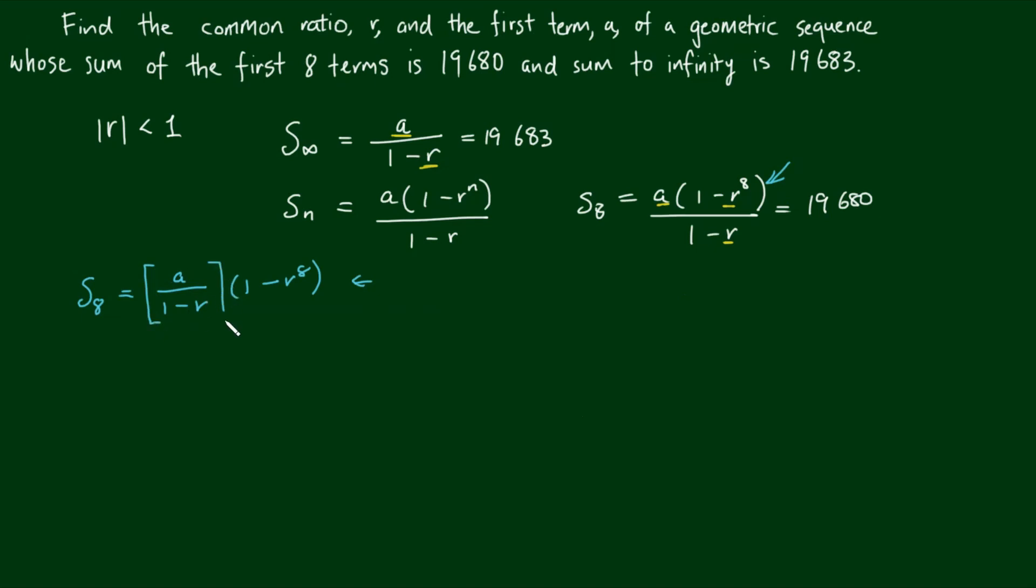I'm going to put a set of brackets here, because this a times one minus r, we already know the answer to that. It is equal to 19,683. I'm going to leave the one minus r to the power of 8 as it is, and we know that this is equal to 19,680.